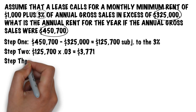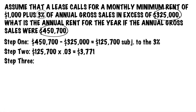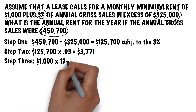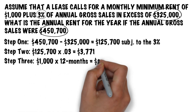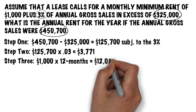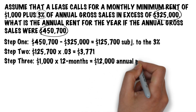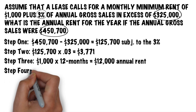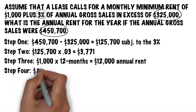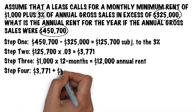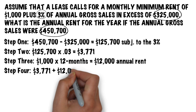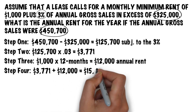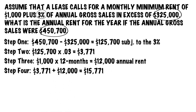Next, we need to determine the annual base rent. The question tells us that the monthly minimum rent is $1,000 per month. All we need to do is take the $1,000 per month, multiply it by 12 months to get an annual minimum rent of $12,000. The final step is to add the additional rent of $3,771 to the annual minimum rent of $12,000 to get a total annual rent of $15,771.